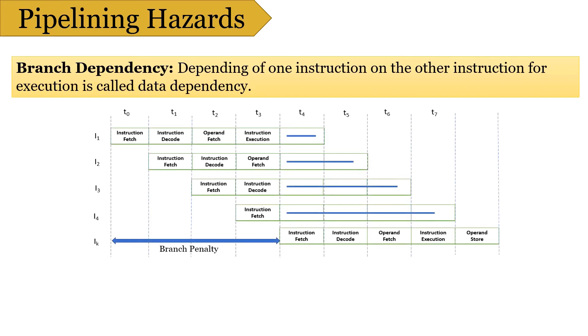The next hazard is Branch Delay. Suppose there are 4 instructions pipelined I1, I2, I3, and I4 in a sequence. Now the instruction I1 is a branch instruction, and its target instruction is IK. The processing starts, and instruction I1 is fetched, decoded, and target address is computed at 4th stage in cycle T3. But till then, instruction I2, I3, and I4 are fetched in cycle 1, 2, and 3 before the target branch address is computed. As I1 is found to be a branch instruction, the instruction I2, I3, and I4 has to be discarded, because the instruction IK has to be processed next to I1.